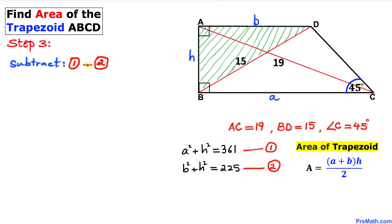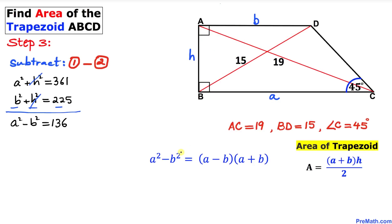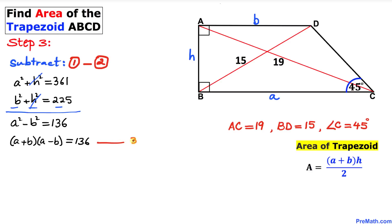In this next step we subtract Equation 2 from Equation 1. The H² terms cancel, leaving a² − b² = 361 − 225 = 136. Using the difference of squares, a² − b² = (a − b)(a + b), so this becomes (a + b)(a − b) = 136. We'll call this Equation 3.